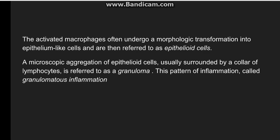Morphologically in granulomatous inflammation, activated macrophages transform into epithelial-like cells called epithelioid cells. These are slipper-like cells, and when epithelioid cells aggregate they form a granuloma, which is mostly surrounded by a collar of lymphocytes. Such inflammation is known as granulomatous inflammation.